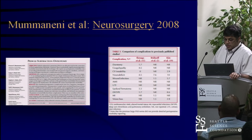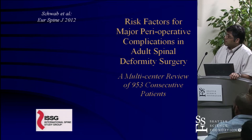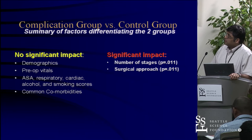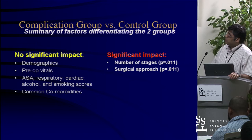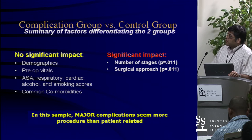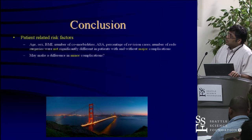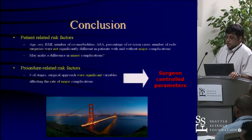When we look at risk factors for major perioperative complications, this was a study that Frank Schraub ran through the ISSG looking at 953 patients. Basically, demographics and common comorbidities didn't really have that much impact on the complication rate. But the number of stages of approach and which approach you took was very significantly associated with the number of complications. The conclusion of that study is that some risk factors we always think about — BMI, number of comorbidities — those have a role, but the real big role is surgeon-controlled parameters: the number of stages of surgery and what kind of surgery you do.